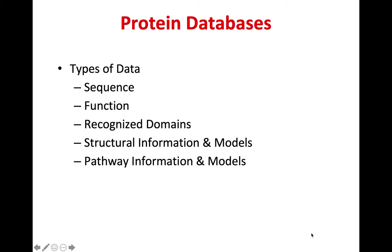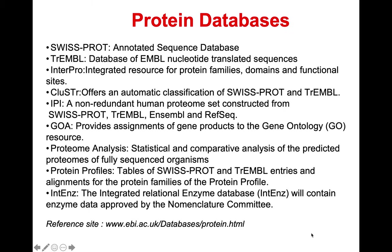Types of data for protein databases include sequence, function, or recognized domains. Recognized domains would be mostly unique to proteins — in genomes you can have domains but they are associated with conserved domains. The protein database also usually provides structural information and models, plus pathway information and models. There are a lot of databases; I have here some of the most common and main ones that people really care for, but there are a whole lot more.